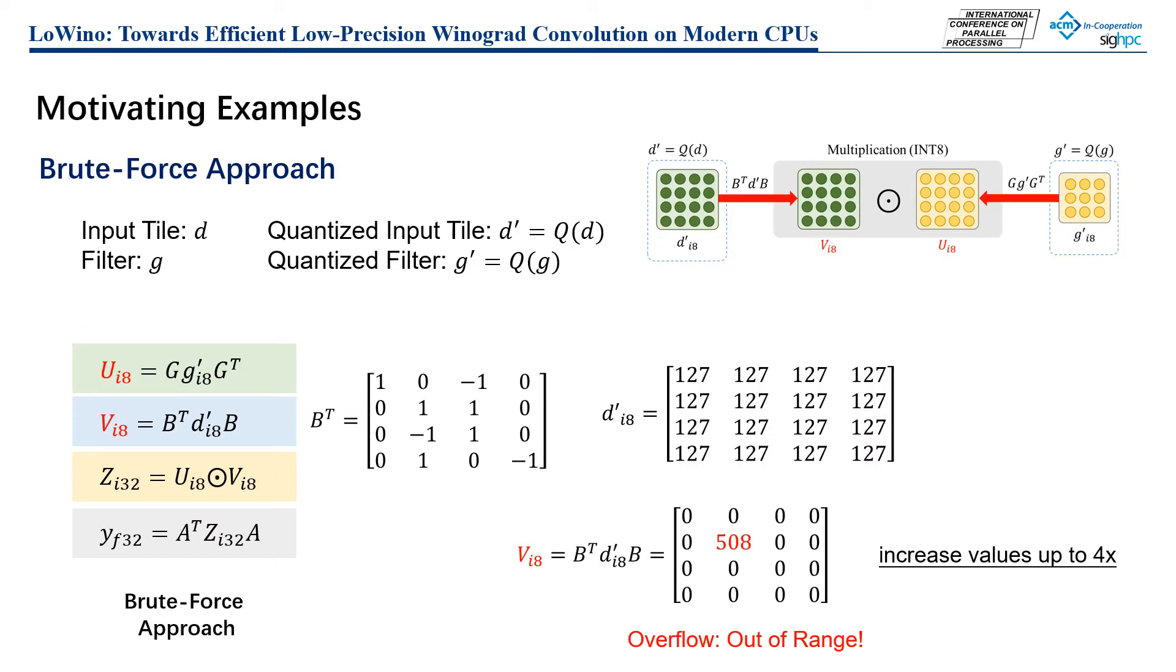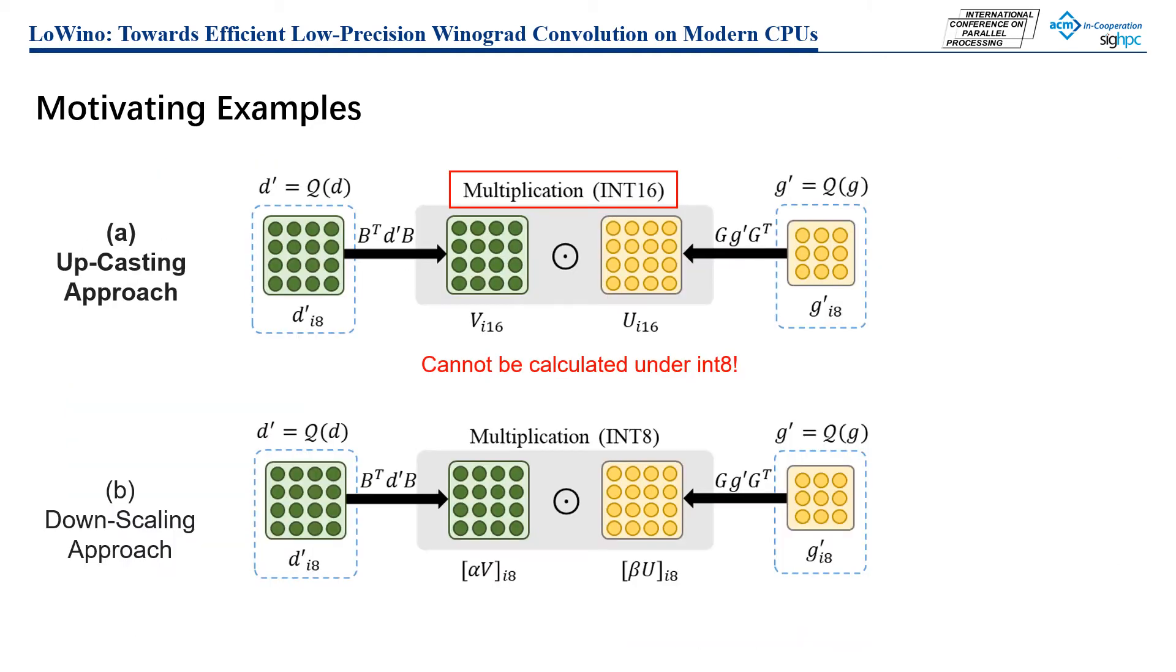Here is an example of a brute force approach for combining Winograd convolution with low-precision computations. Due to the transformation operation increasing the values of original data, it leads to an overflow problem in the transformed data. Therefore, an effective mechanism is needed to avoid the overflow problem. Upcasting is one existing solution. It upcasts the data type of the transformed matrix, for example, using INT16 rather than INT8, thereby avoiding the overflow problem.